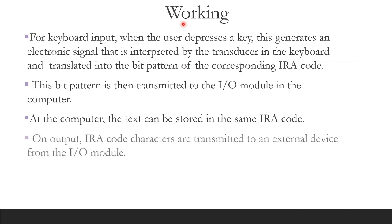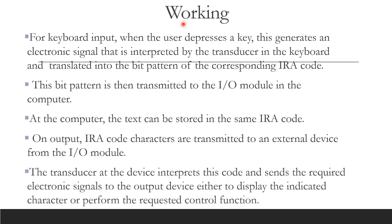For output, the process is opposite. The ASCII code is transmitted from the computer to the IO module, then from the IO module to the external device. The transducer interprets it and converts it into an electronic signal that drives the output device — for example, to print or display the character.